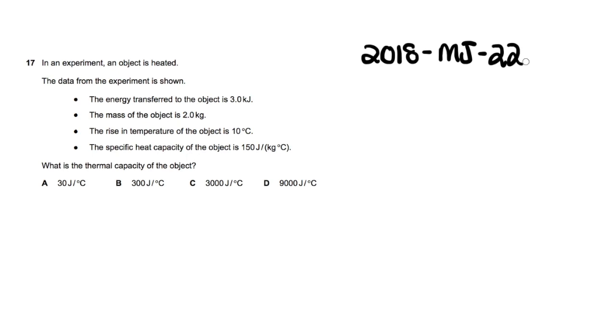The first question says in an experiment an object is heated. The data from the experiment is shown: the energy transferred to the object is 3 kilojoules, the mass of the object is 2 kg, the rise in temperature of the object is 10 degrees Celsius, and the specific heat capacity of the object is 150 joules per kg degree Celsius. It asks us what is the thermal capacity of the object.